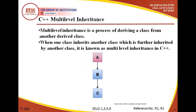Now let us see C++ multi-level inheritance. As you can see in the diagram, three classes are present: A, B, and C. A is the very first class, which is inherited by B, and then B is inherited by C, forming a ladder-type structure. Multi-level inheritance is a process of deriving a class from another derived class, where one class inherits another class which is further inherited by another class. This is known as multi-level inheritance in C++.